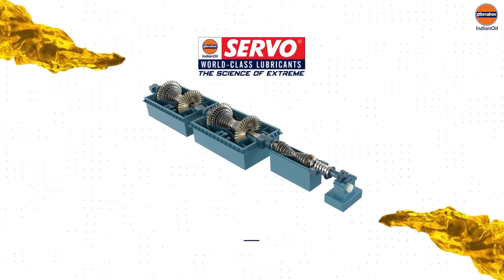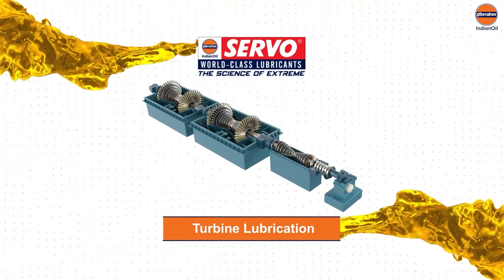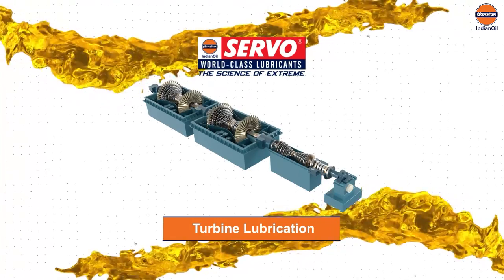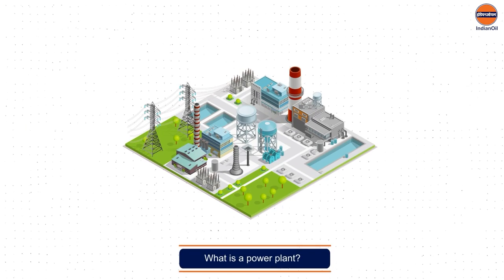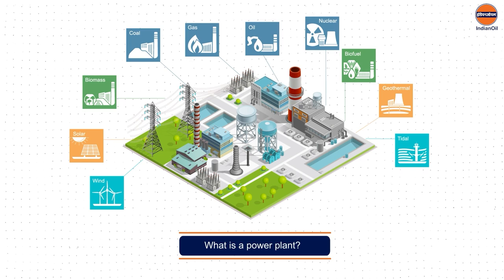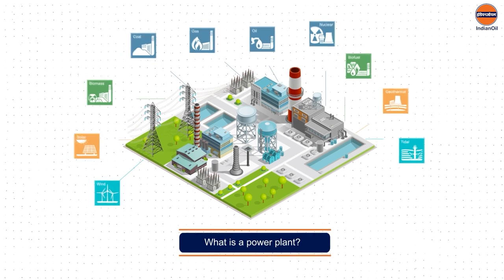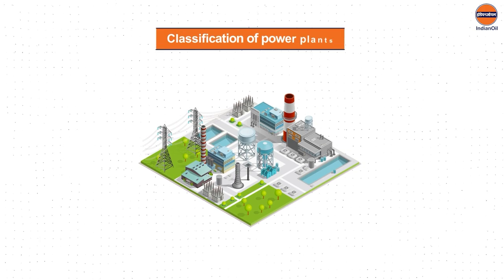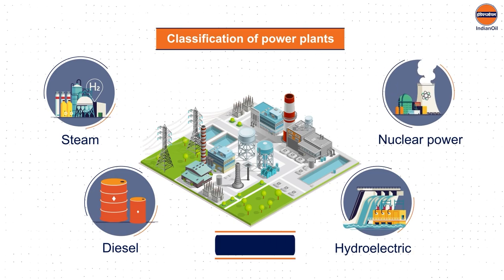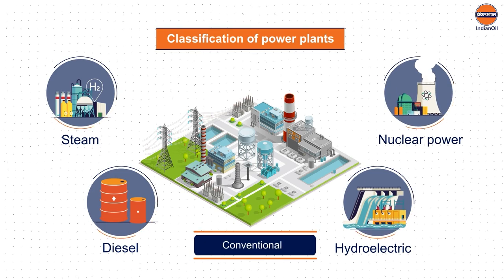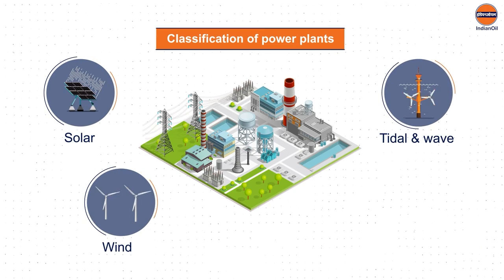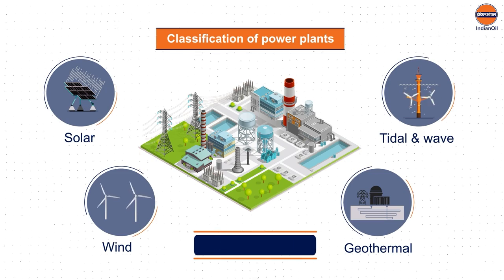Let's now learn about the lubrication of turbines in power plants and the range of Servo Prime series turbine oils. A power plant is a facility designed to produce electric energy from other forms of energy resources. Power plants that operate using steam, diesel, hydroelectric and nuclear power are conventional, while those using solar, wind, tidal, wave and geothermal energy are non-conventional.